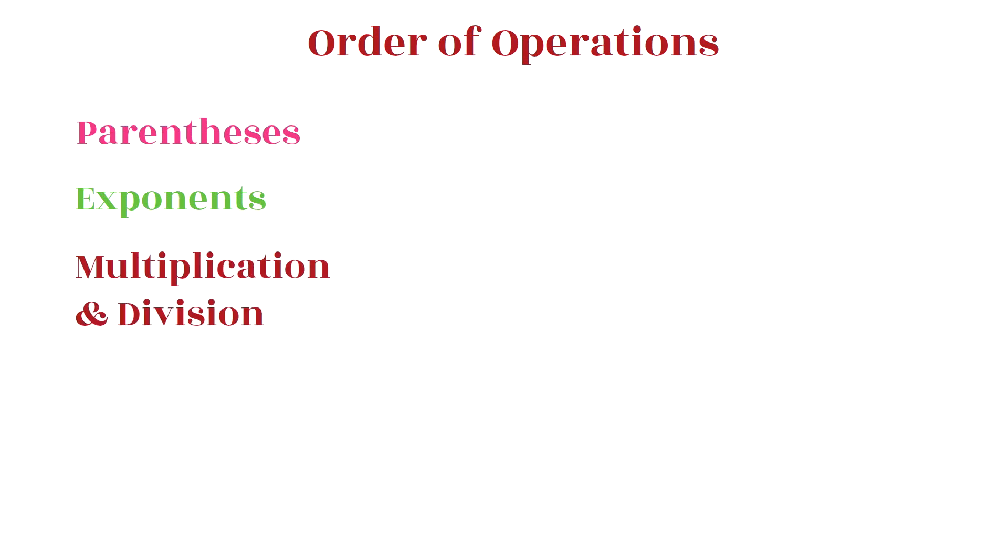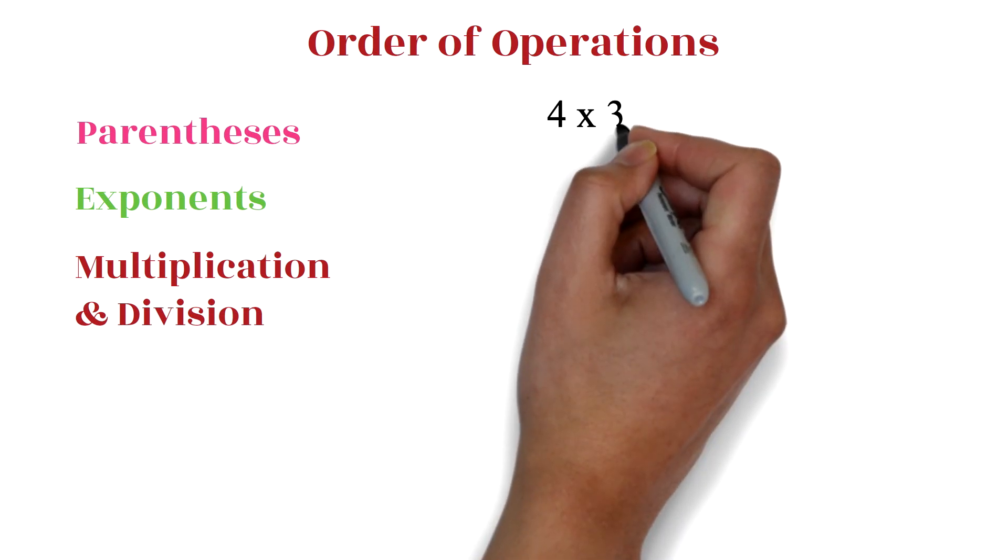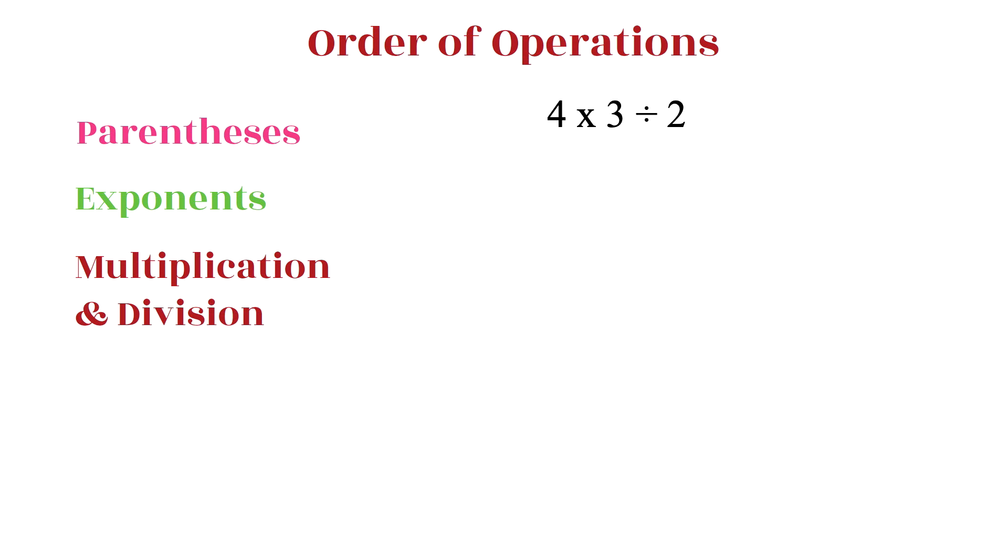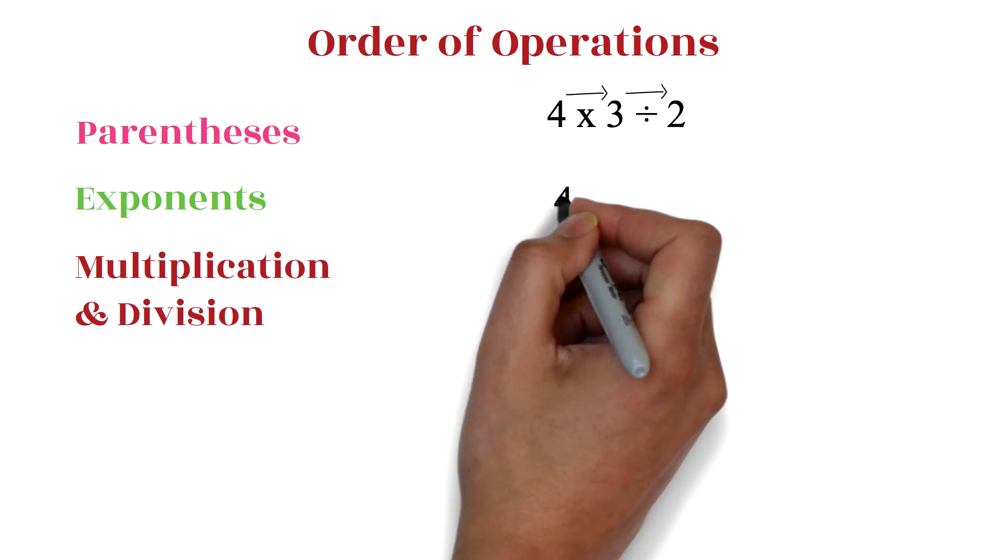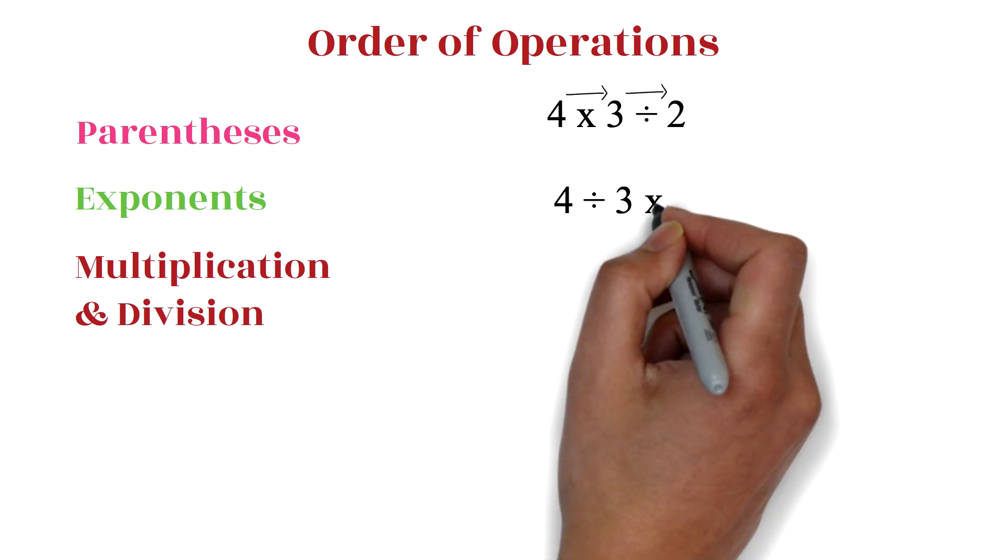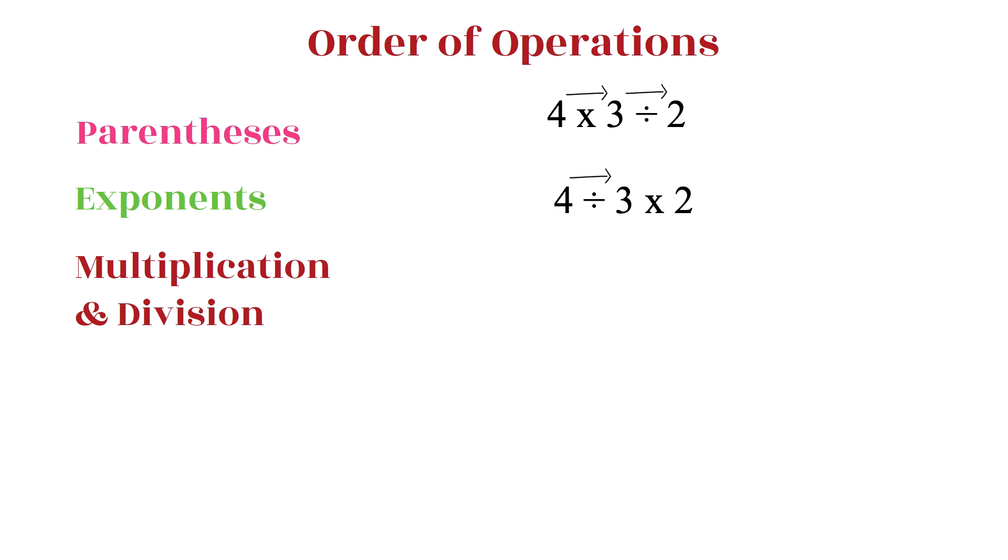Multiplication and division from left to right. This means that if you have, let's say, 4 times 3 divided by 2, you'll do the multiplication first and division second. But if you have 4 divided by 3 times 2, you'll do the division first and the multiplication second.